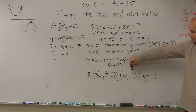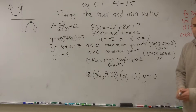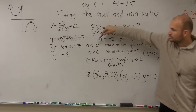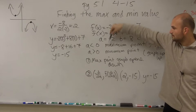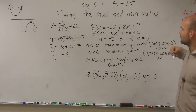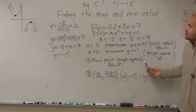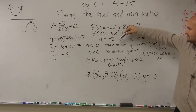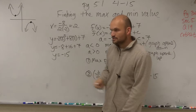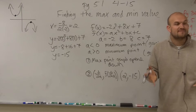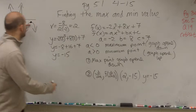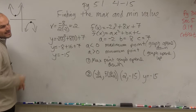Sometimes we write it as a vertex as a point, or you could say that minimum value would be when y equals negative 15. Just to review — first, you need to know this test. You can tell if your graph opens up or down. We're talking about a maximum point here. Since a is less than 0, my maximum point is at y equals negative 15. So that's going to be the largest value for my graph — negative 15 — meaning everything else is going to be going down.